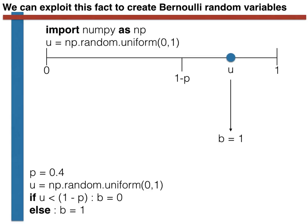The way that we write this code in Python is shown in the bottom left of the slide. The first line here sets p, the parameter of our Bernoulli random variable. The second line generates our uniform random variable. In the third line, we then use an if-else statement to set the value of b.